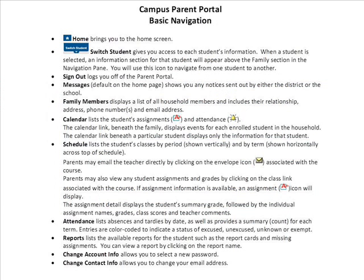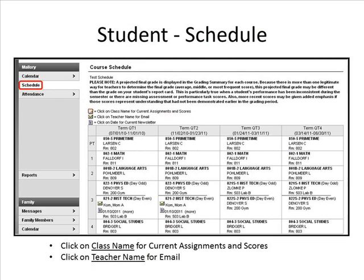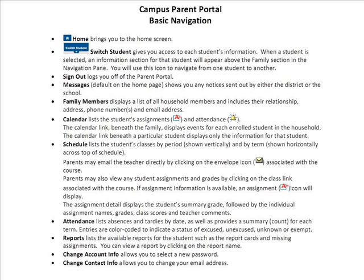Schedule lists the student's classes by period, shown vertically, and by term, shown horizontally across the top of the schedule. Parents may email the teacher directly by clicking on the envelope icon associated with the course. Parents may also view any student assignments and grades by clicking on the class link. The assignment detail displays the student's summary grade followed by individual assignment names, grades, class scores, and teacher comments.